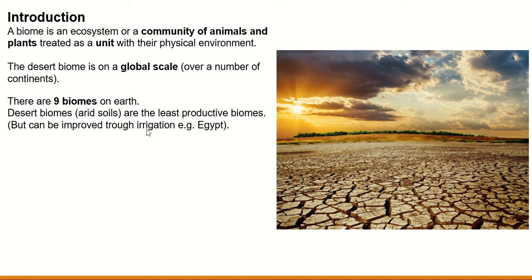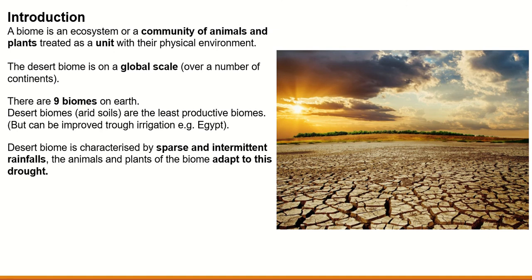Deserts can be improved through irrigation — the artificial watering of plants. If you fill up a watering can and water the flowers in your garden, that is small-scale irrigation. In Egypt, for example, they've reclaimed desert land through irrigation schemes. They have massive sprinklers that are moved slowly across the desert and they water the land. This means that the arid soils can support vegetation again, but this can only be done with a large-scale investment in irrigation.